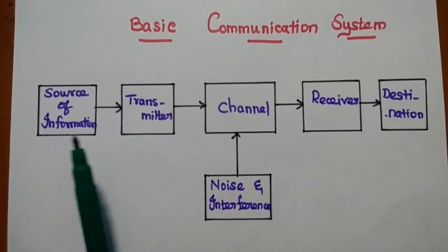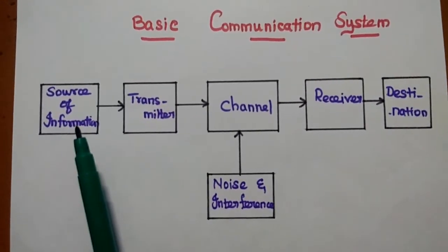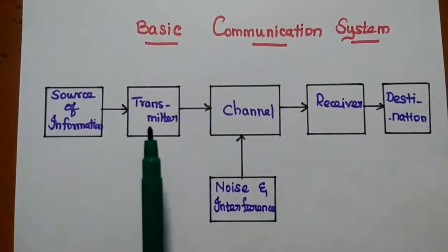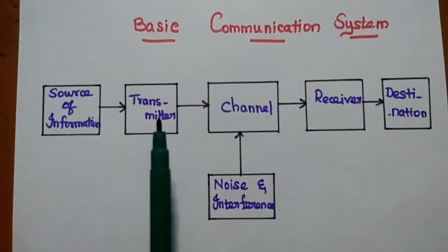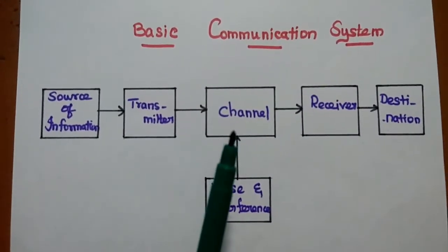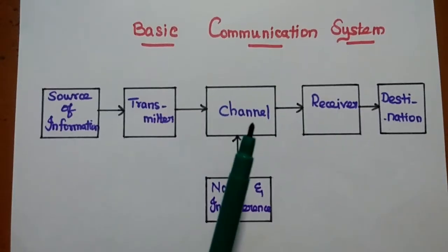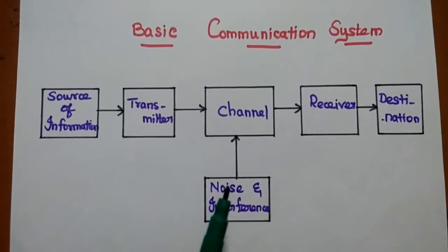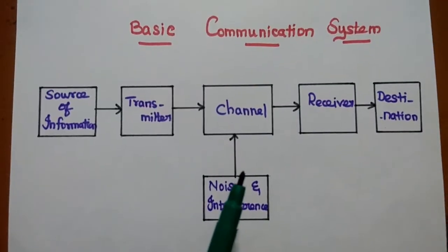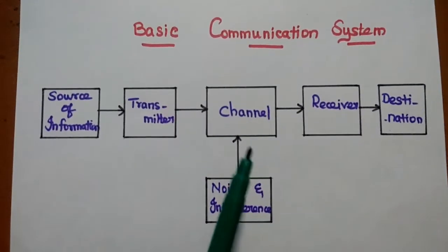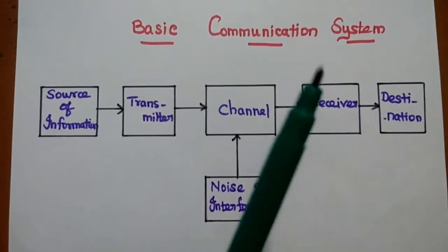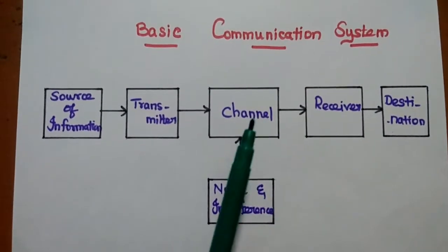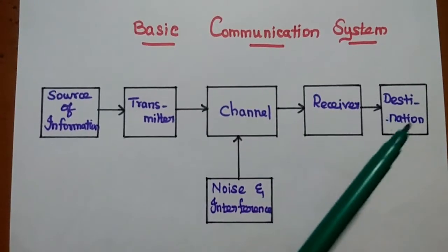To summarize: the information source generates the message signal; the transmitter converts it into a suitable electrical signal for efficient transmission; the channel is the transmission medium from transmitter to receiver; noise is an unwanted and random signal added to the desired signal in the channel; and the receiver reconstructs the original signal and delivers it to the destination.